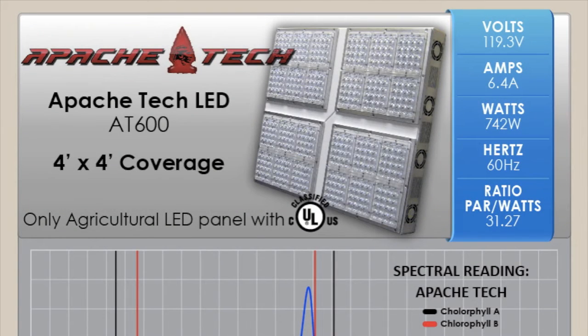Now here's some of our test data. As you can see we measured this light in a standard wall plug, a 120 volt. We measured the amperage coming out which was about 6.4 amps and we also measured the wattage which was 742 watts at the wall.